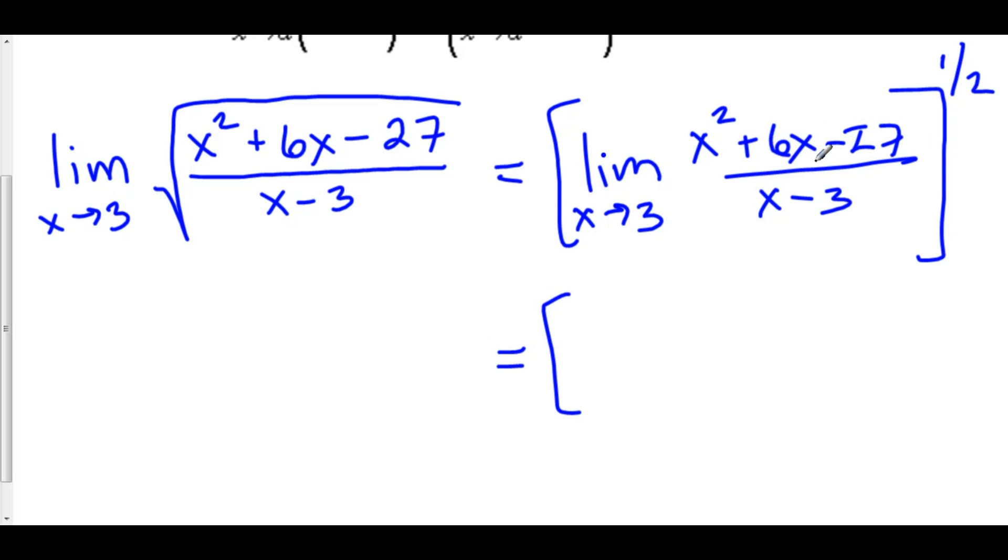So let's factor our top. Here we have the limit as x approaches 3 of two numbers that multiply to negative 27 and add to 6. How about we have x plus 9 and x minus 3. Oh, look, x minus 3. That's kind of nice because that will cancel out. And this is all to the one half power.